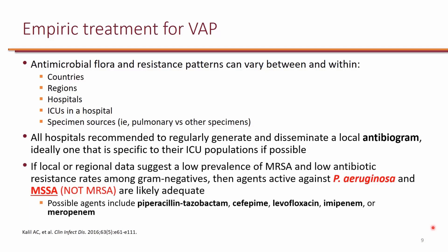One key recommendation from the guideline is that while we want to empirically cover Staphylococcus aureus, if based on local resistance patterns it's unlikely to be MRSA, it's probably okay to just cover for MSSA instead of MRSA. In real world practice, most physicians would still cover MRSA in VAP patients, but the guideline notes that if MRSA is unlikely based on resistance patterns, targeting MSSA is acceptable. There are agents — like piperacillin-tazobactam and cefepime — that cover Pseudomonas as well as MSSA.